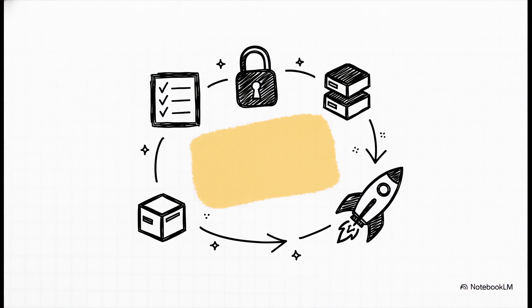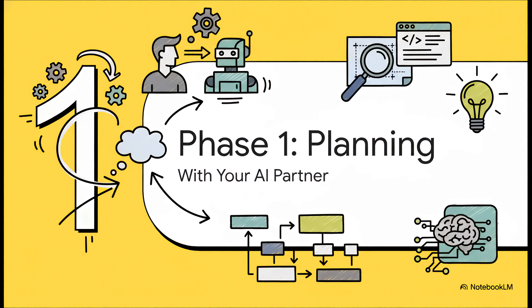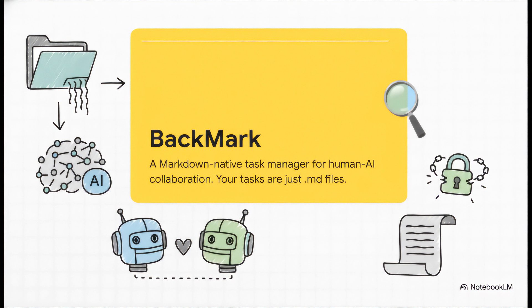The best part? They're all built on open standards, they're actually a joy to use, and they play nicely with the way you already work. Every great project kicks off with a great plan. But these days, planning isn't just you and a blank text file — more and more, we're working alongside AI assistants. So the real question is, how do you manage that collaboration without it getting messy? Meet Backmark. This is the first tool in our suite, and it's a task manager built from the ground up for developers who collaborate with AI. The idea is so simple it's brilliant: your entire task board is just a collection of markdown files. That means no vendor lock-in ever. Your project plan is as open and future-proof as it gets.